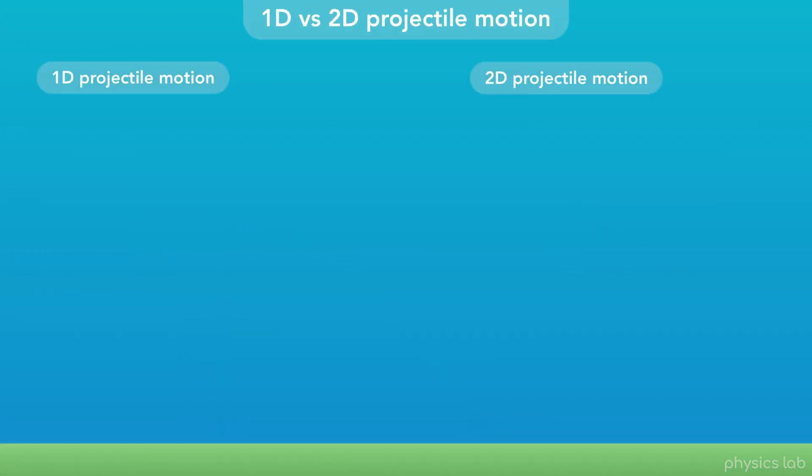So what's different about 2D projectile motion that we haven't already covered? In 1D projectile motion, an object moves in the y direction, and it doesn't move sideways. The initial velocity is also the initial y velocity. The velocity in the x direction is 0.